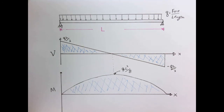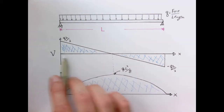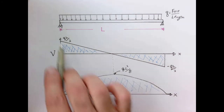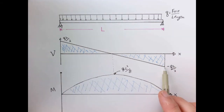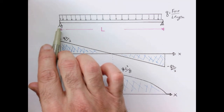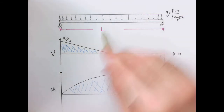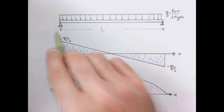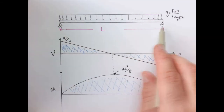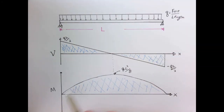We worked this example previously, so you may want to go back and watch that lecture. What we found is that the internal shear force at any cross section, as a function of distance along the beam, has a linear decrease. It starts at a value of QL/2 and ends at minus QL/2. The value QL/2 comes from the support reaction — the total distributed force Q times L is split evenly between the two supports due to symmetry. The bending moment was derived as a parabola with a maximum value of QL²/8.